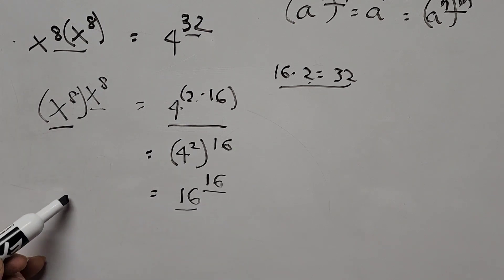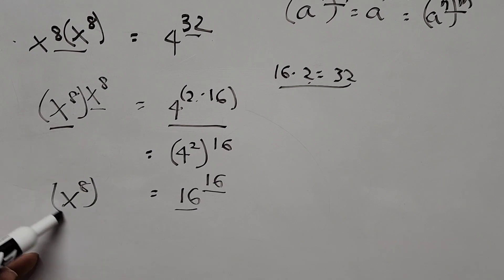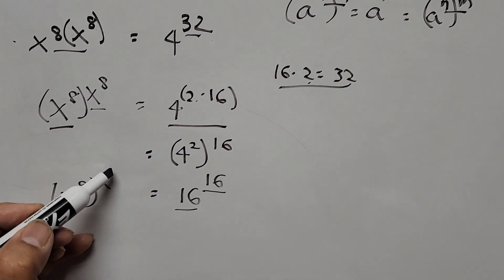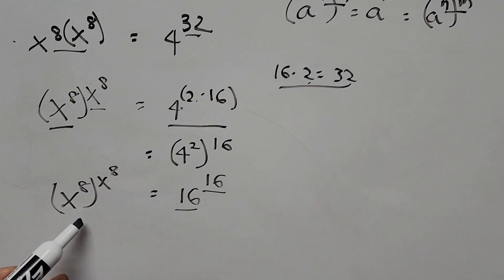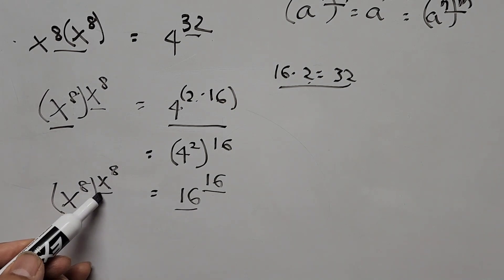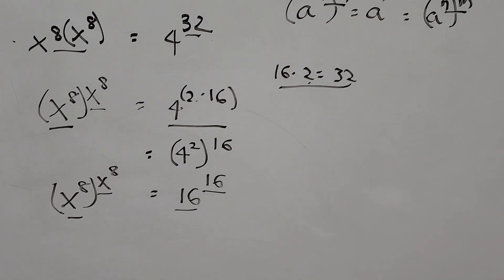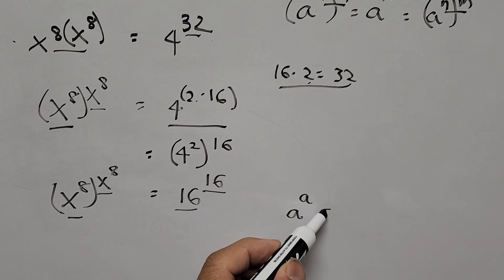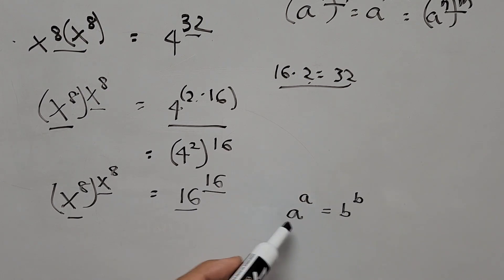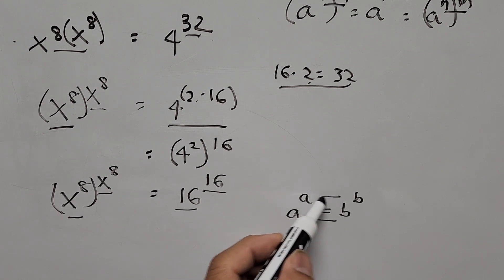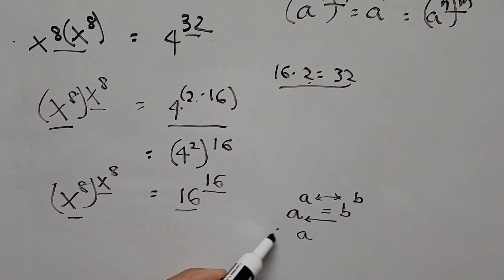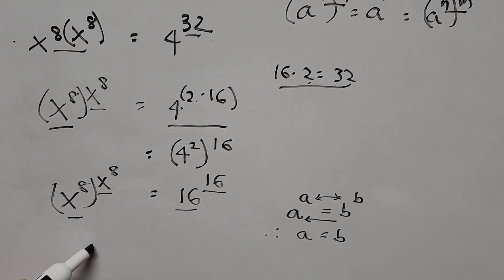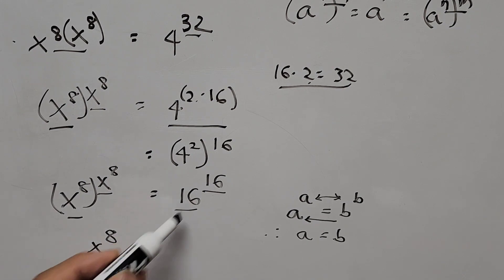On the left-hand side, we have x to the power of 8, raised to the power of x to the power of 8 — likewise, the base is exactly the same as its exponent. Based on comparison, using the rule that if a to the power of a equals b to the power of b, then a equals b, we get x to the power of 8 equals 16.